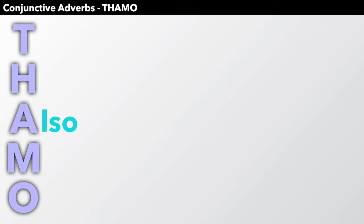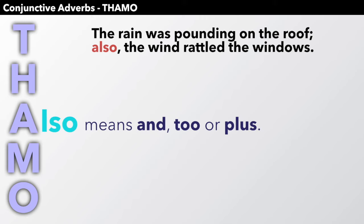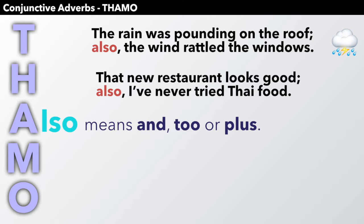Also means and, to, or plus. The rain was pounding on the roof. Also, the wind rattled the windows. That new restaurant looks good. Also, I've never tried Thai food.